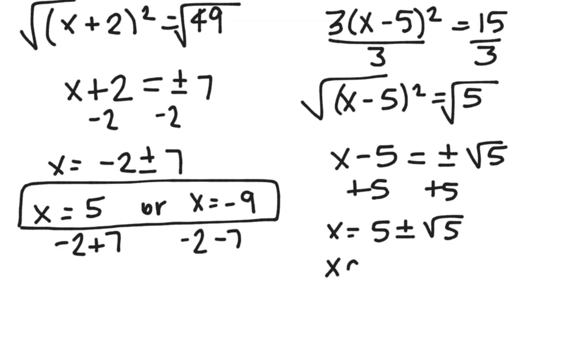Now, in my calculator, I'm going to type in 5 plus square root of 5, and it's going to tell me the decimal answer is approximately 7.23.